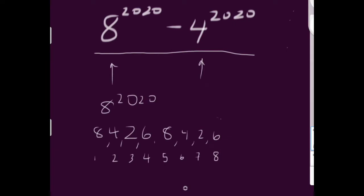So I've rewritten the pattern here with the exponents underneath: 1, 2, 3, 4, 5, 6, 7, 8, and the final digit of 8 to that power on top here. So we've got 8, 4, 2, 6, 8, 4, 2, 6. And this continues into infinity, right? The same pattern over and over again.